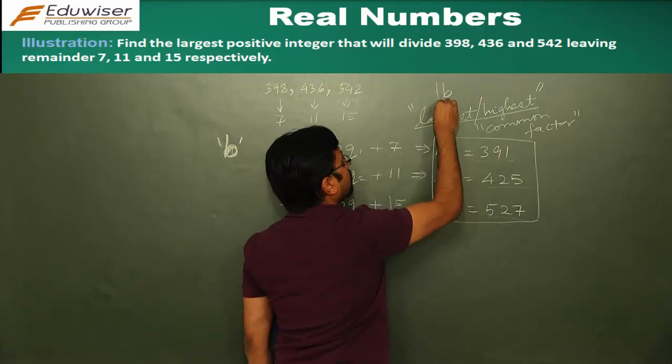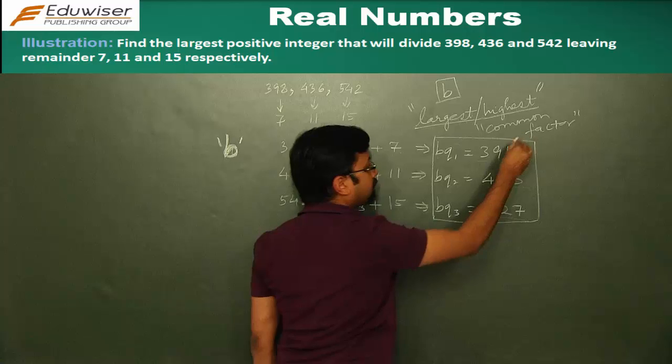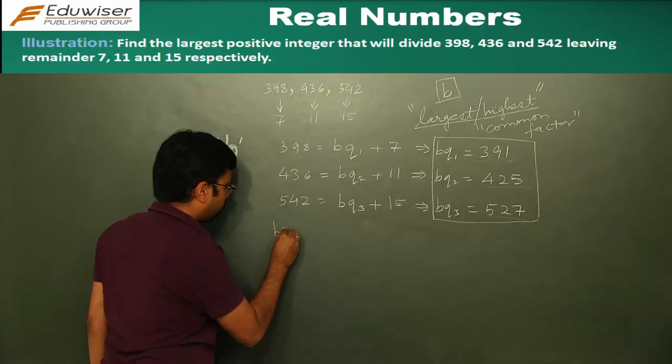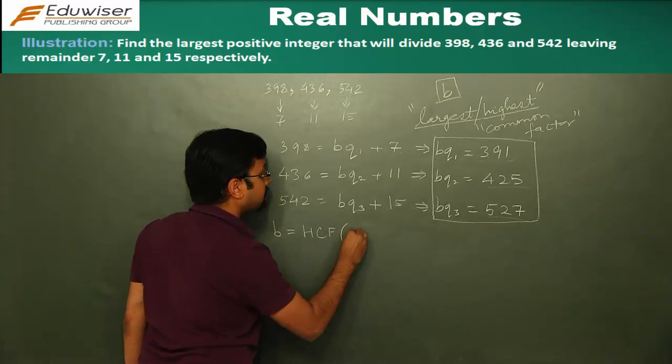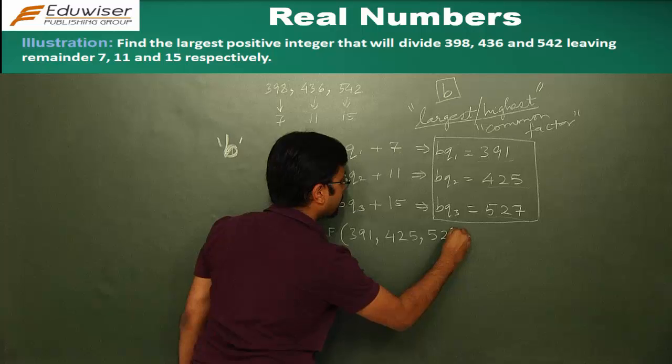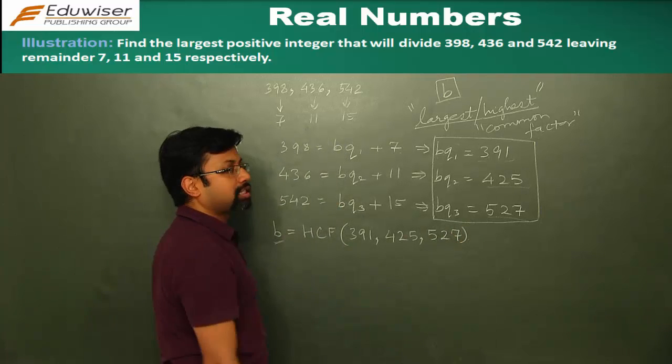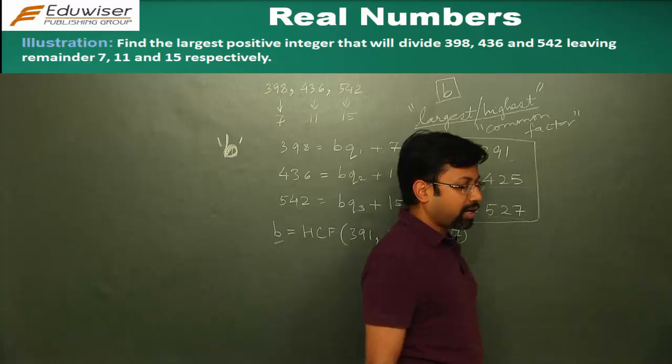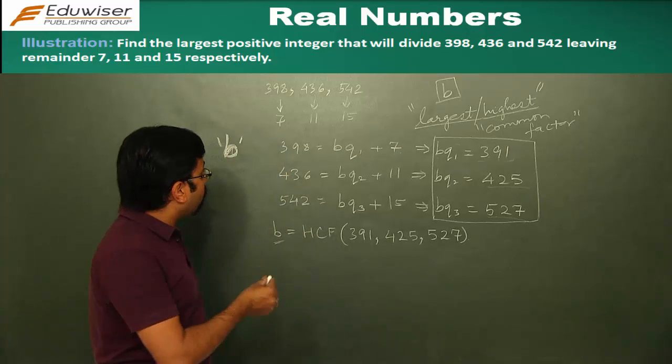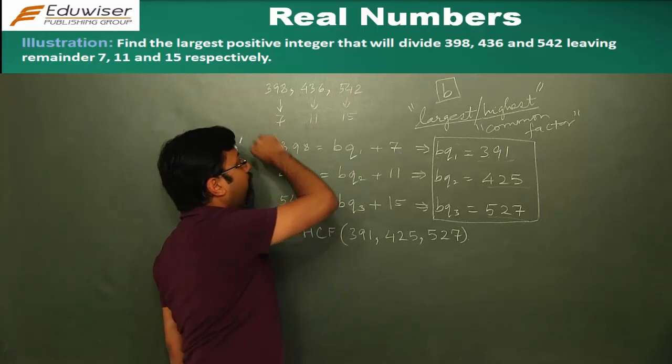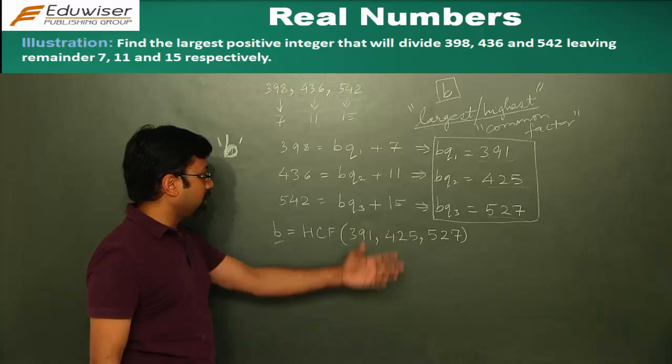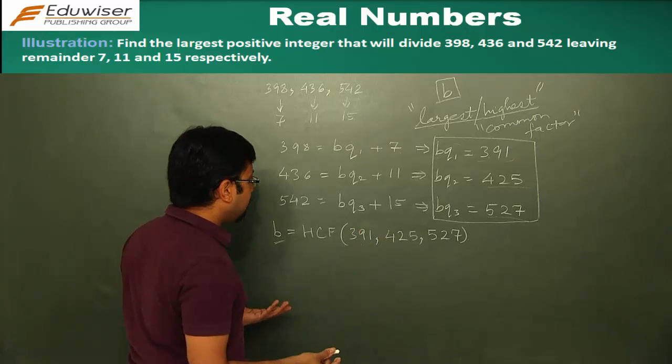So for any number that is the highest common factor, what is it called? It's called the HCF. So B is what? B is, from the equation we figured out, that B is the HCF of 391, 425 and 527. So to find out the largest integer which will divide 398 to give a remainder 7, which will divide 436 to give a remainder 11 and divide 542 to give a remainder 15 would be the HCF of these three numbers. And to find out the HCF of these three numbers, you can employ any technique.